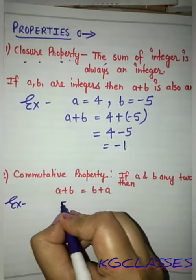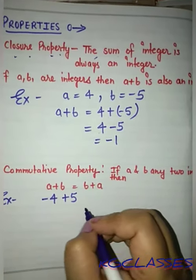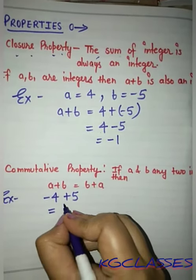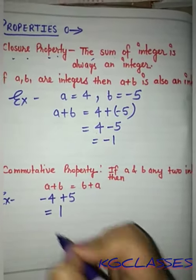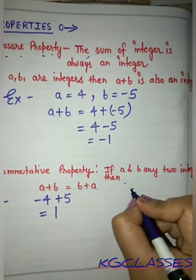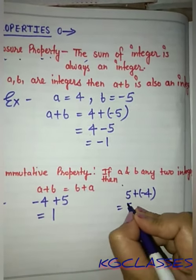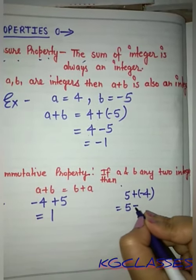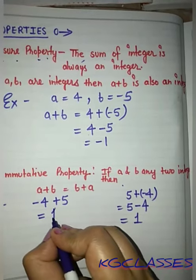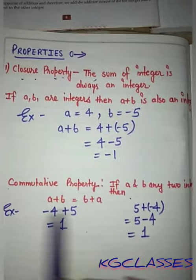Let's take an example. If we have minus 4 plus 5, we get 1. And if we do 5 plus minus 4, we also get 1. The answer is the same. That is why the commutative property is satisfied in addition.